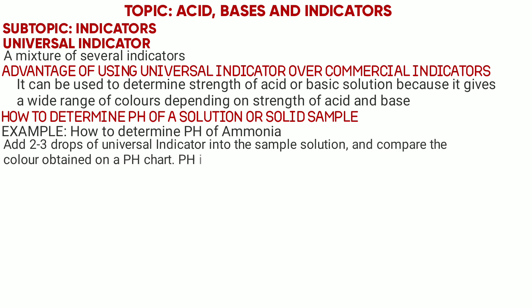Ammonia, being a weak base, gives a pH of 8 or 9. If you are told to determine the pH of a solid sample such as an antacid tablet, first crush the antacid tablet into powder, add water and dissolve it, then add two or three drops of Universal Indicator into the solution obtained, then compare the color obtained on a pH chart. The antacid tablet, being a weak base, will give you a pH between 8 and 9.